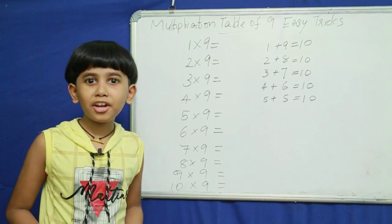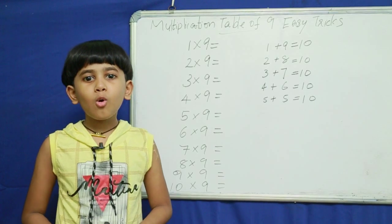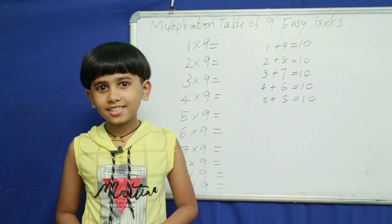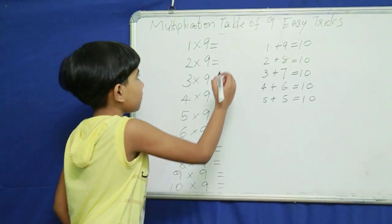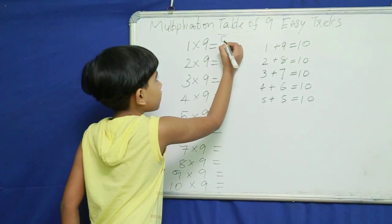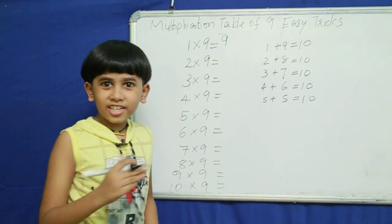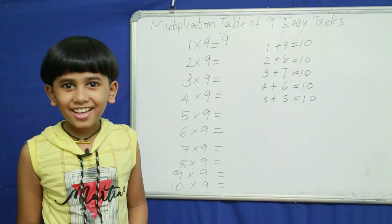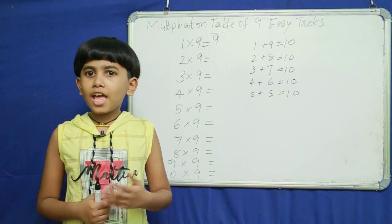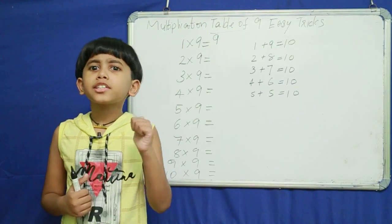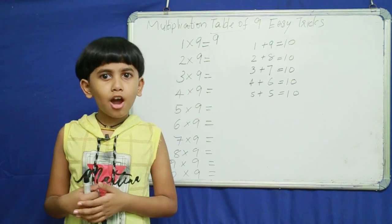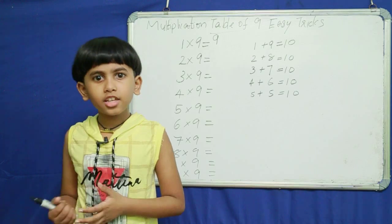Everybody know? 1 nine's are 9. Okay? Then 2 nine's are what? How to find easily?